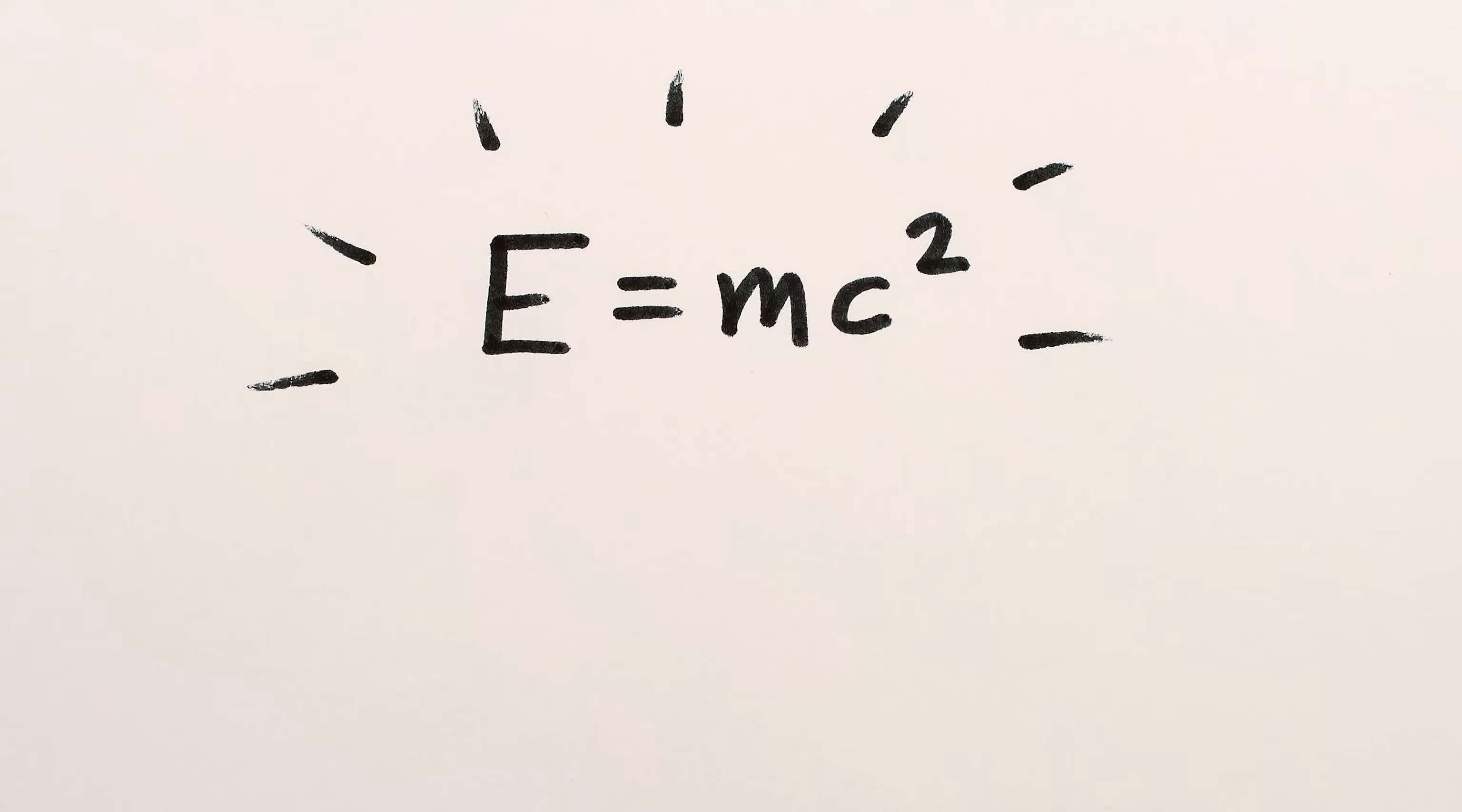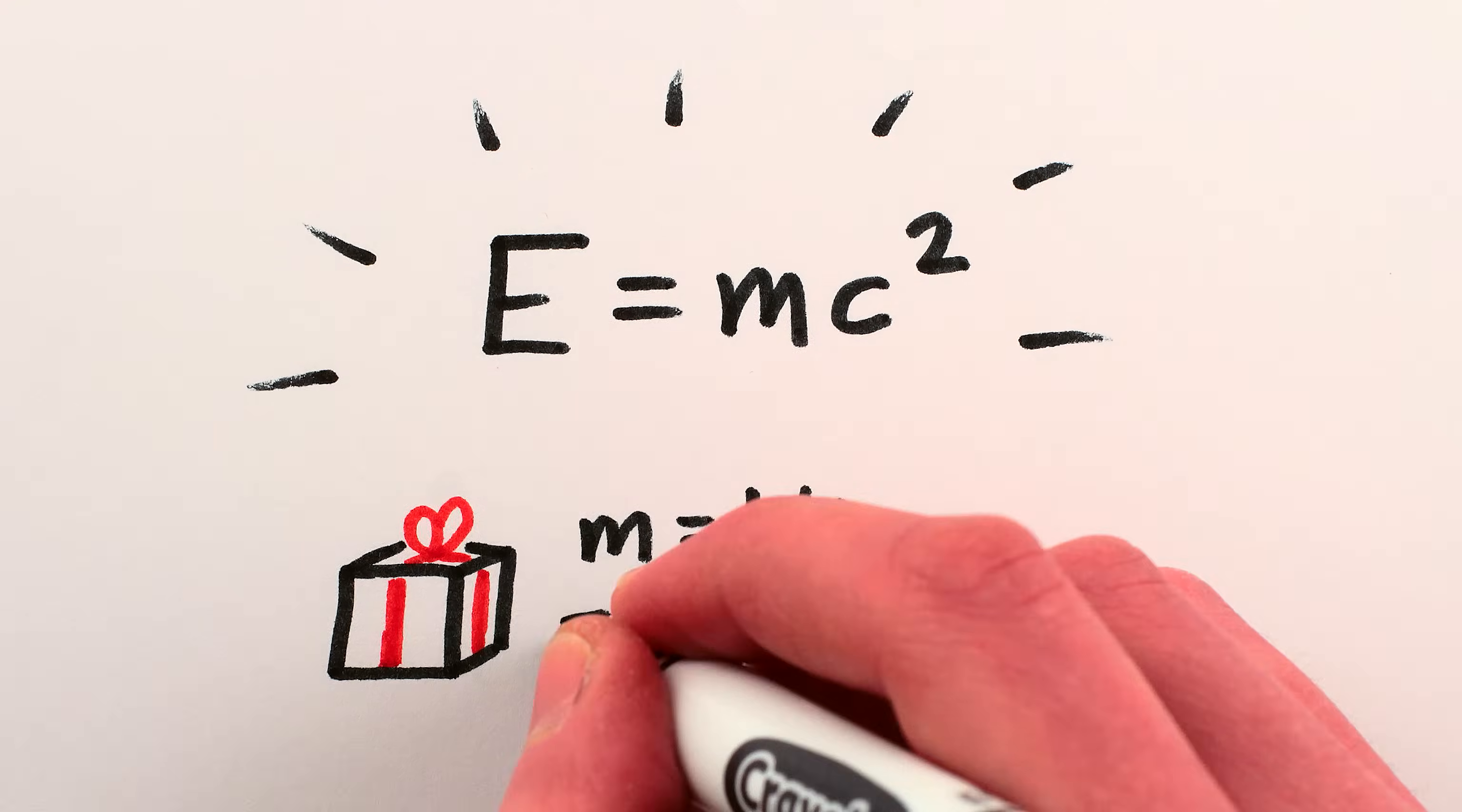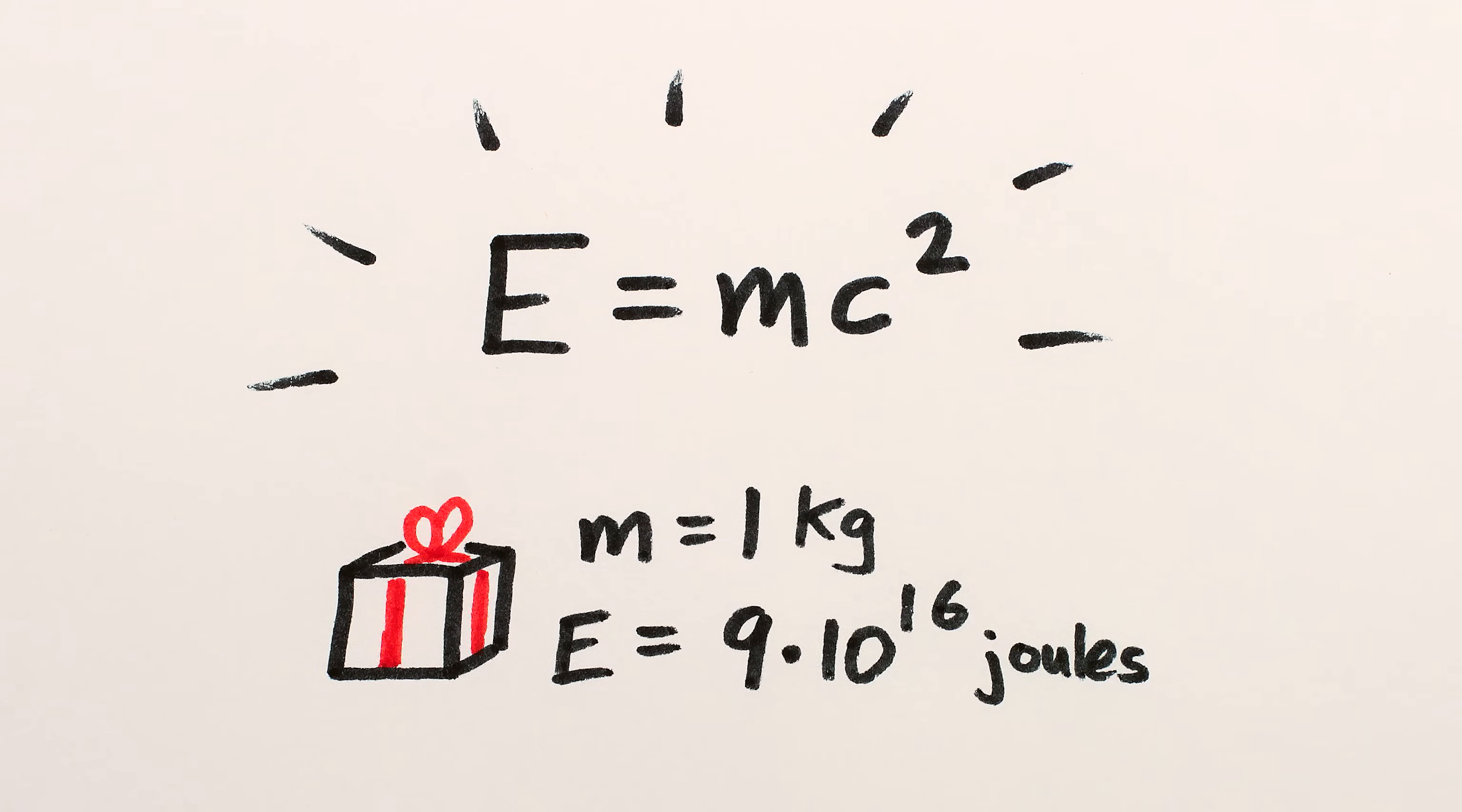E equals mc squared, the most famous equation in the world, describes the fact that anything with mass possesses a huge amount of energy, in principle.